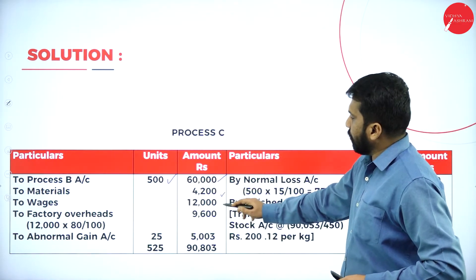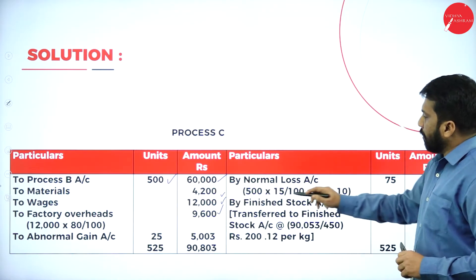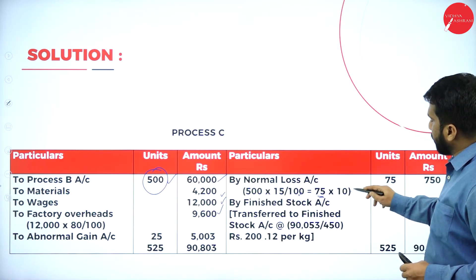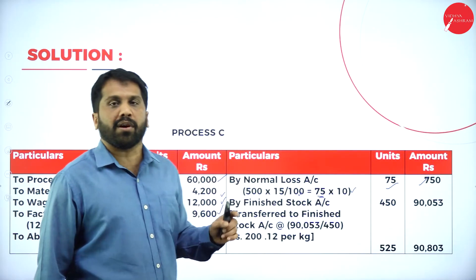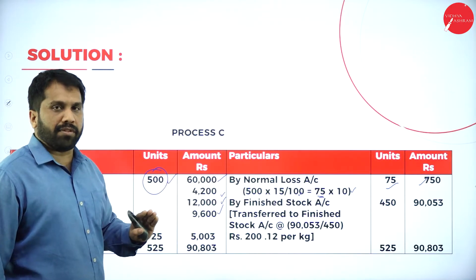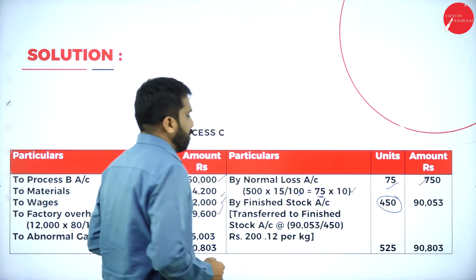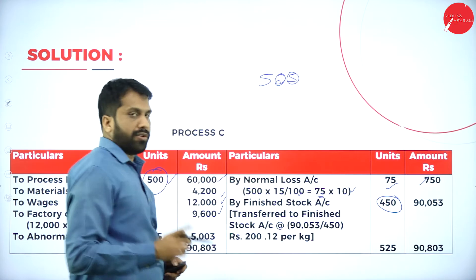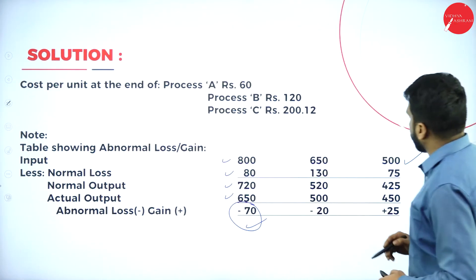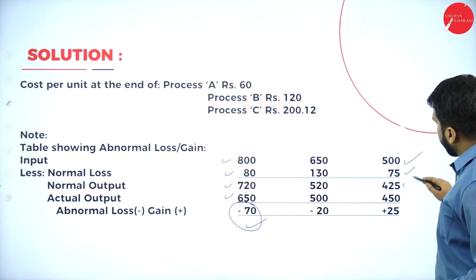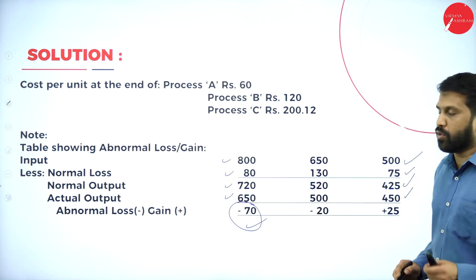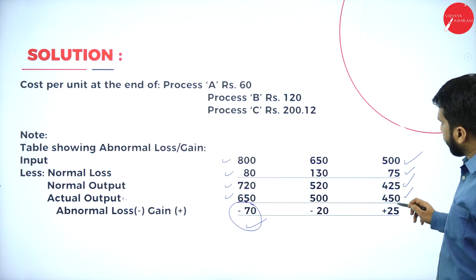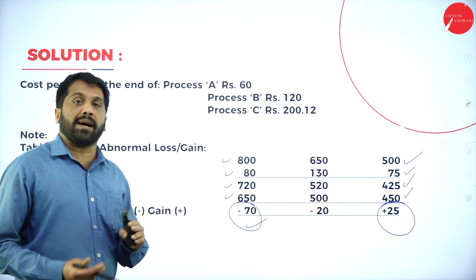For Process C: input is 500 kg at Rs. 60,000. Add material, wages, and factory overhead (80%). Normal loss is 15% of 500 = 75 units, sold at Rs. 10 each: 75 × 10 = Rs. 750. Actual output (closing) is 450 kg. Working: 500 − 75 = 425 (normal output) minus actual output 450 = −25. Since the answer is negative (−25), this is abnormal gain of 25 units.